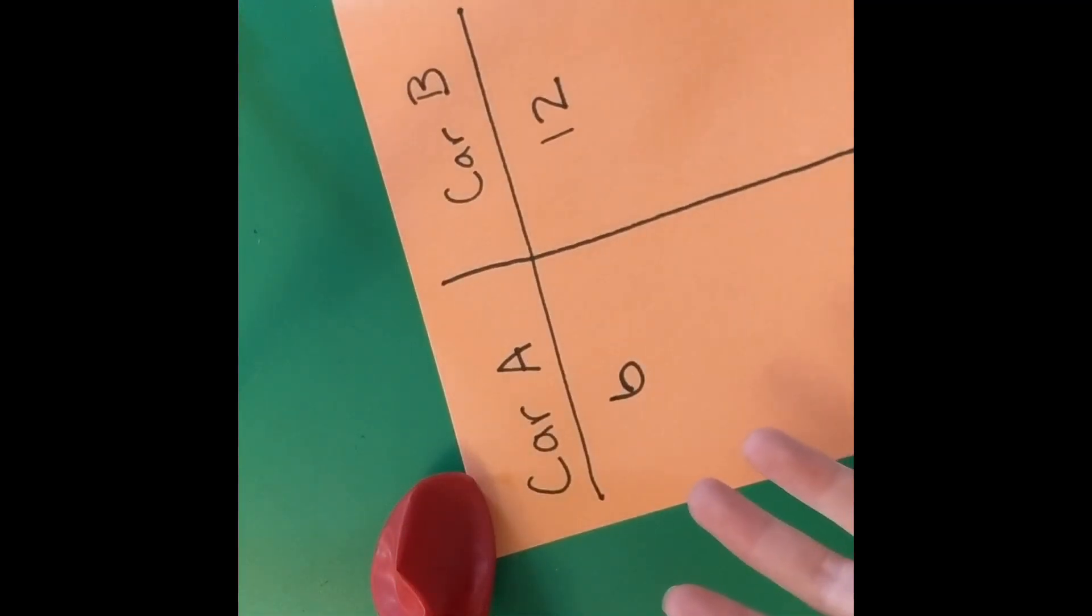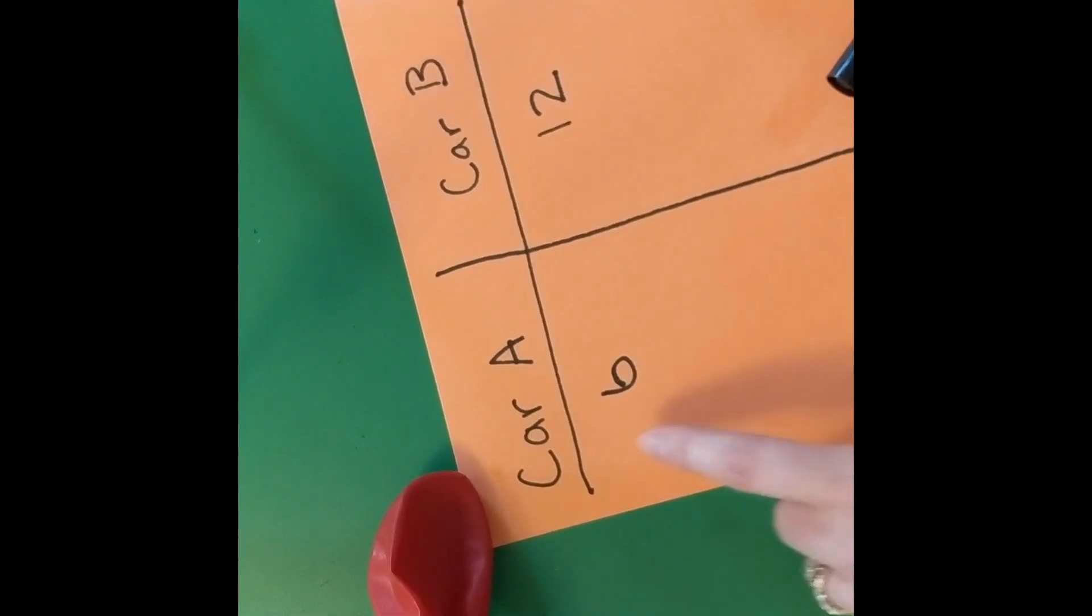Another fun math concept you can incorporate into this activity is making a table. Let's say you have two cars that are racing each other. In the first race, car A went 6 inches and car B went 12 inches. Which car went furthest? Car B and you can keep recording your numbers for each race.